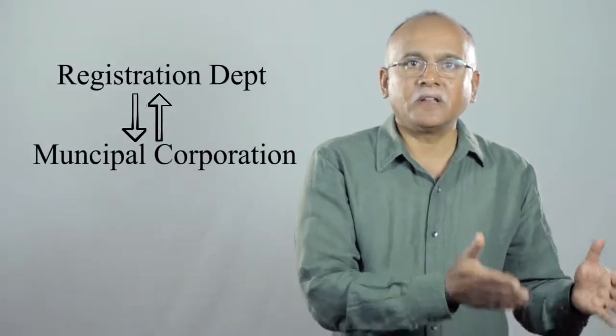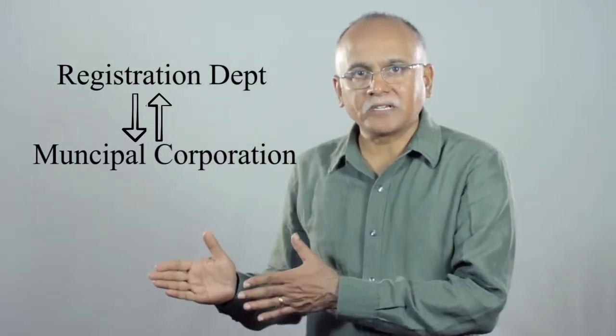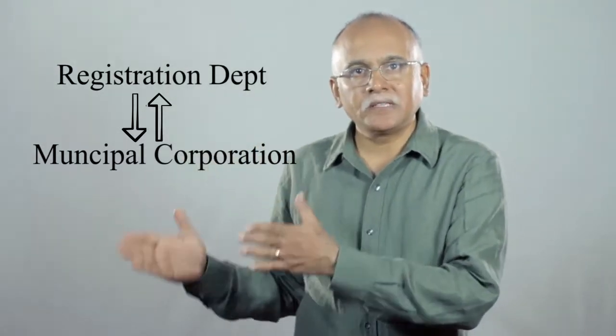Now don't ask me why but these two departments don't talk to each other. In some of these states they are beginning to talk to each other because in my opinion the simplest thing would be that once you register your property, the registration department automatically passes on that information to the city corporation and the city corporation issues your khata automatically. But as of today between two computerized processes you have to be a manual link. You have to collect your document from here and give it there. This kind of lack of interoperability between two computerized systems in the government actually causes a great deal of corruption.